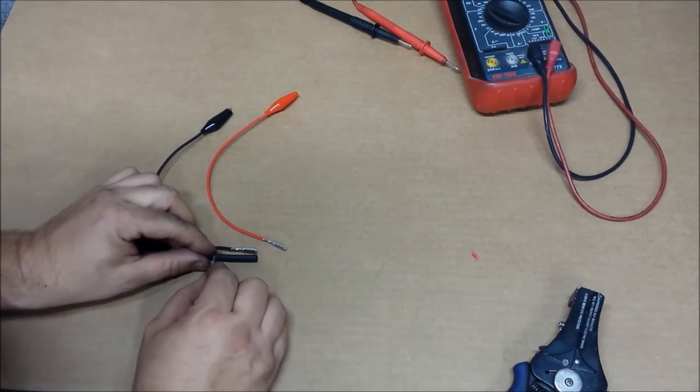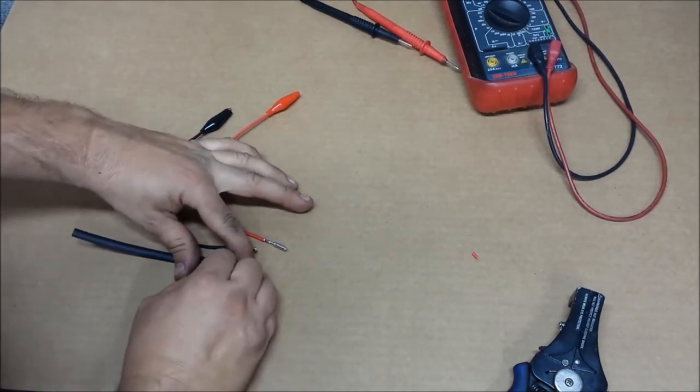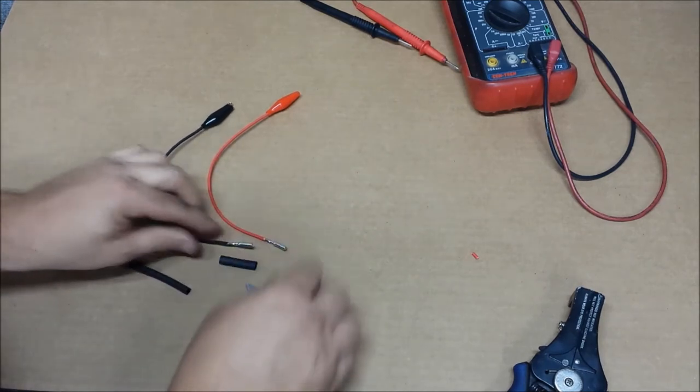Now we just got to trim them down to size. You don't need to use the heat shrink here, of course. But it makes kind of a good strain relief on the wire. So you don't bend that back and forth too much.